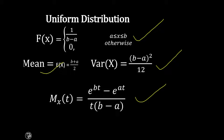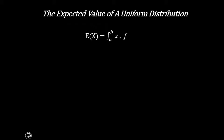We will be proving the mean, the variance, and also the moment generating function. Now we start with the mean. The expected value of a uniform distribution is given as E of x equals integral from a to b of x multiplied by f of x dx, whereby this f of x is the probability density function of the uniform distribution, which is one of the continuous variables.